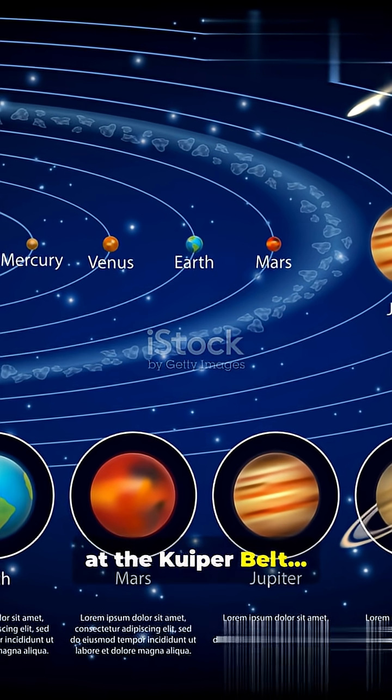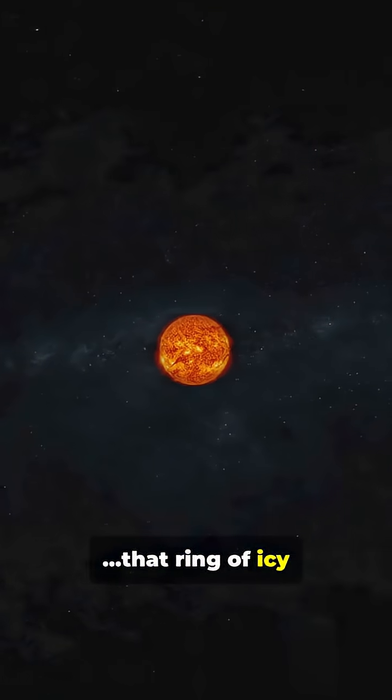We thought our solar system ended at the Kuiper Belt, that ring of icy debris just beyond Neptune. The Kuiper Belt we all know, but far beyond it.